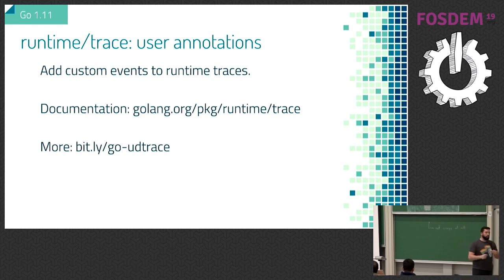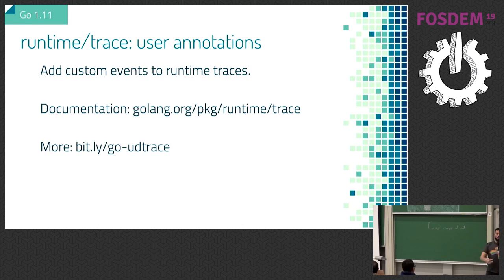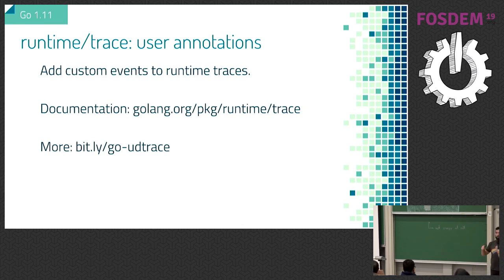Runtime trace. If you've used the Go runtime tracer, you know it generates events for every runtime thing — new goroutines, channel blocks, garbage collector starts, etc. Now you can log your own custom events too. This is useful if you want to track things that matter to your specific application but aren't runtime events. There's a good blog post at bit.ly/go-ud-trace for user-defined traces.